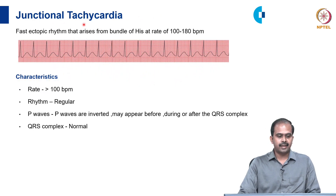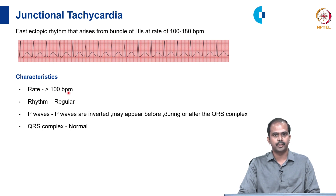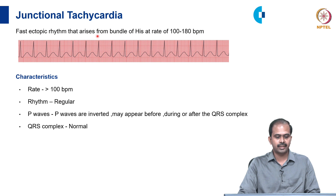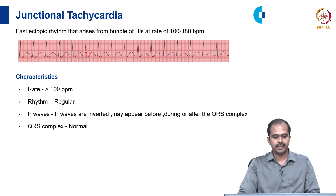Junctional tachycardia is a fast ectopic rhythm arising from the bundle of His at a rate of more than 100 beats per minute. It has a regular rhythm with inverted P waves appearing before, during, or after a normal QRS complex. In this ECG, there are 2 big boxes between R waves, so 300 divided by 2 equals 150. The P wave appears after the QRS complex and the QRS is normal. This is an example of junctional tachycardia.